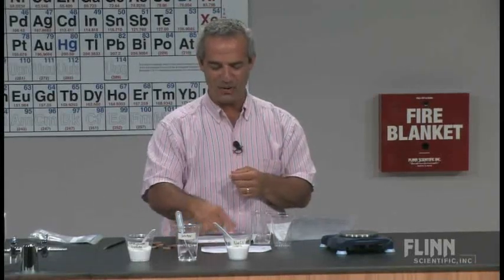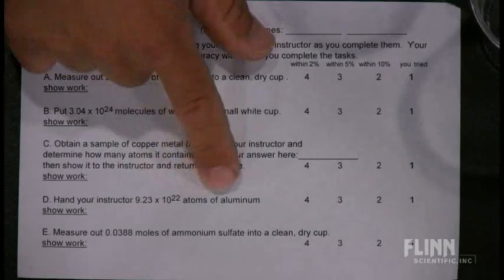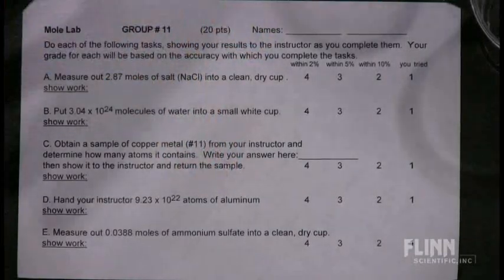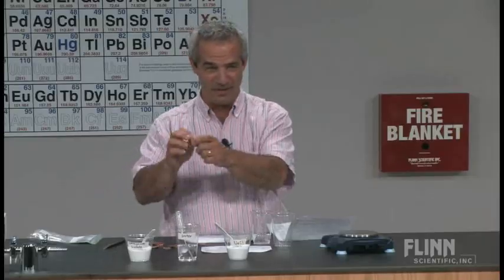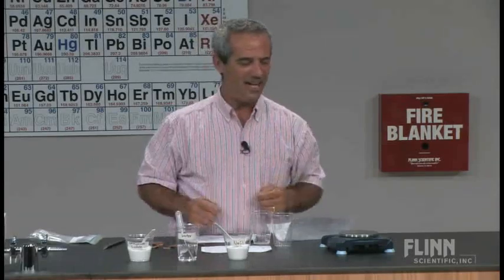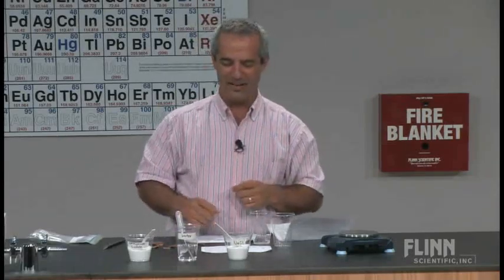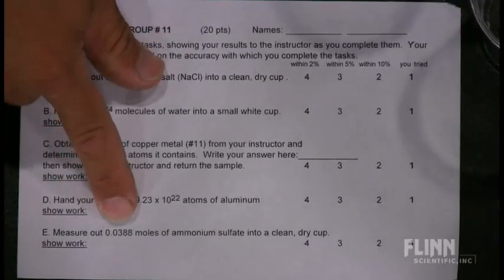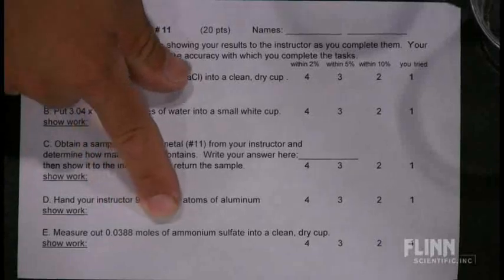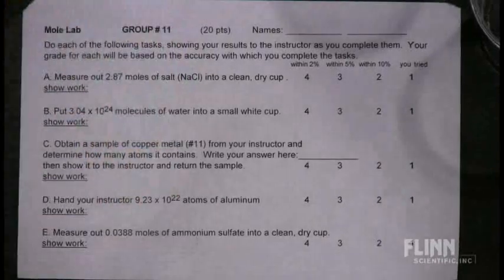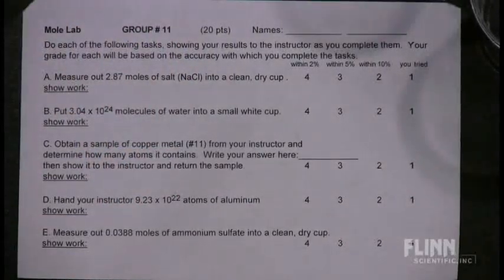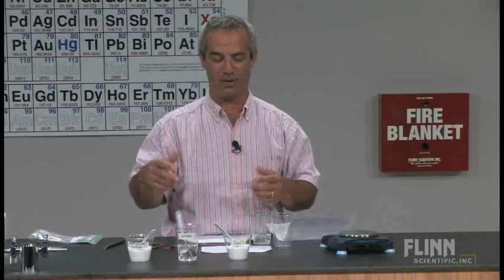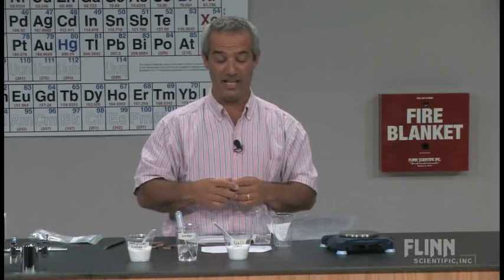Task D: hand your instructor 9.23×10²² atoms of aluminum. I have a piece of aluminum foil at the stations — they tear it off and bring it up. And the last task, Task E: measure out 0.0388 moles of ammonium sulfate — written out as the name, not the formula — into a clean, dry cup.